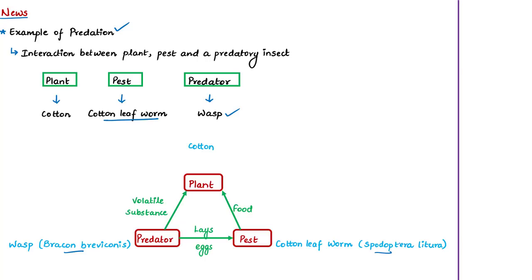The cotton leaf worm eats cotton plant leaves. When the worm feeds on the leaves, the leaves release aromatic or volatile vapors into the air. These aromatic vapors spread in the air and attract wasps, which are predatory insects. The wasps lay their eggs on the skin of the cotton leaf worm. When the eggs of the wasps hatch, the larvae feed on the worm itself, thereby killing it. That is why we call this wasp a predatory insect.